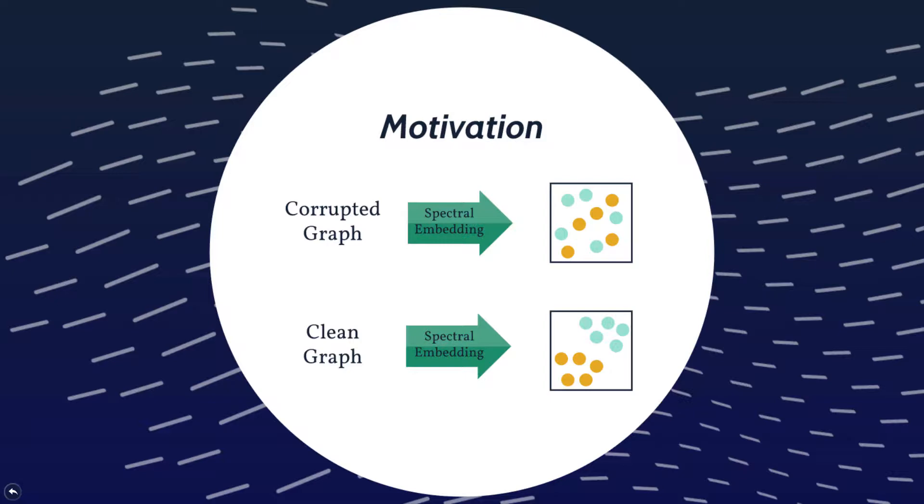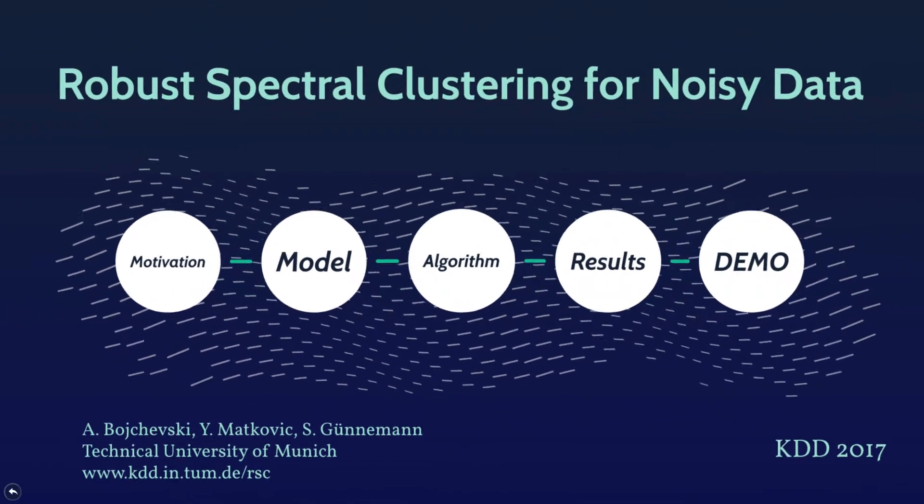While spectral clustering is highly powerful, one of its biggest limitations is its sensitivity to noise and corrupted data. Intuitively, if we have a corrupted graph as input, the spectral embedding we obtain will be distorted and the underlying clustering will be obfuscated.